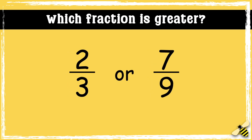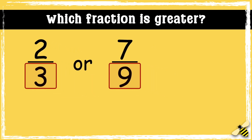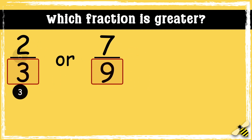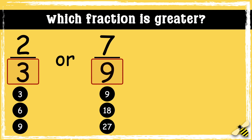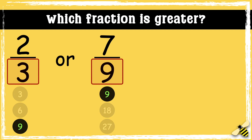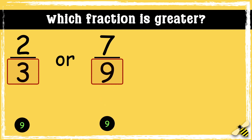So 3 quarters is greater than 5 eighths. Let's have another go. Which fraction is greater: 2 thirds or 7 ninths? Remember, to compare the fractions we need to make sure the denominators are the same. So let's look at the multiples of 3 and 9 to find the lowest common one. I can see that 9 is the lowest common multiple, so I can make both the denominators 9. We need to multiply 3 by 3 to make 9.